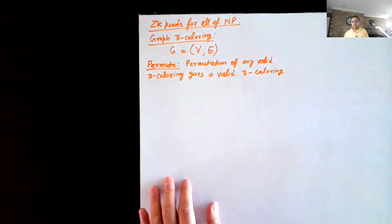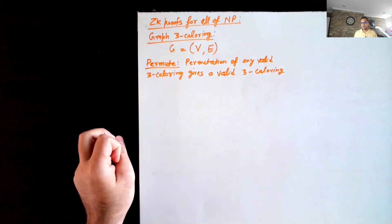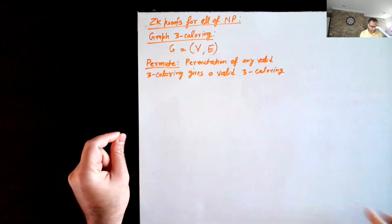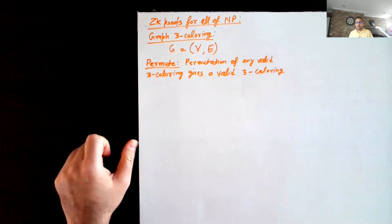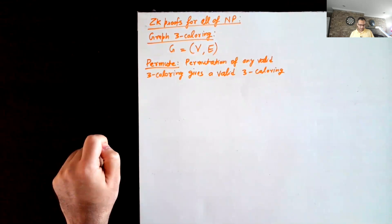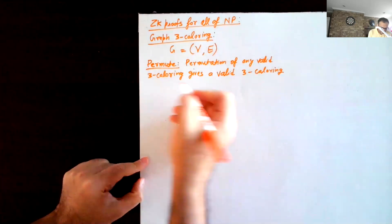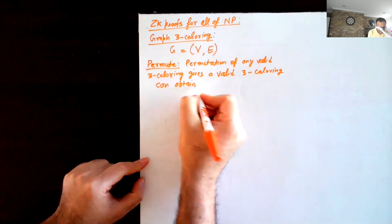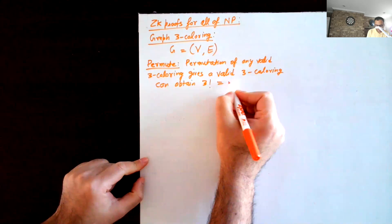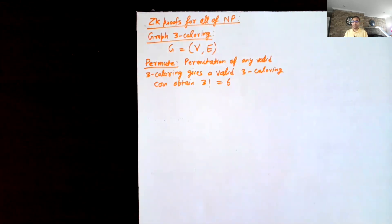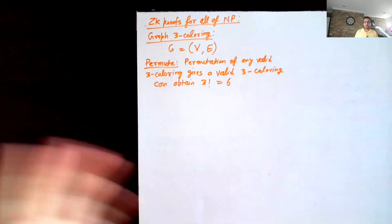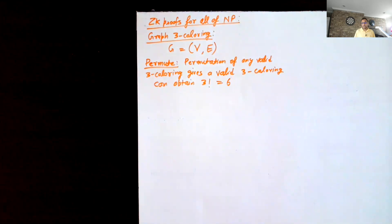If the colors on any edge were different, even after you change the name of the colors, they would still be different. Given any three-coloring, how many valid three-colorings can you obtain by permuting the colors? You can obtain three factorial, which is six: the first color can map to any of three, then two, then one — so three times two times one equals six valid three-colorings.